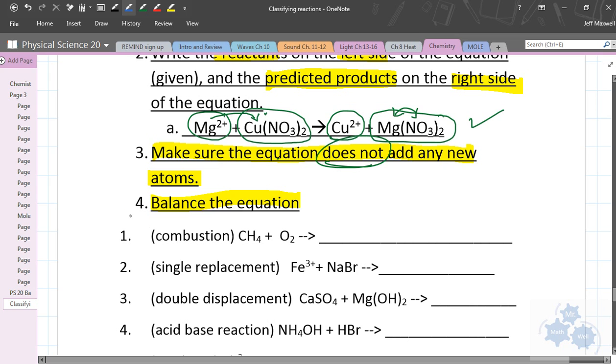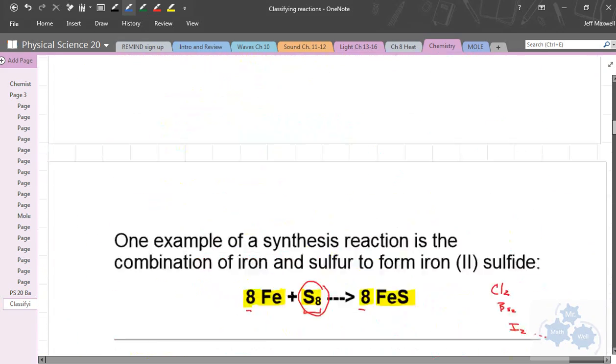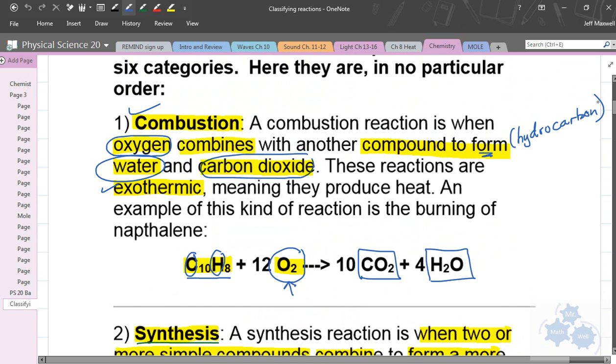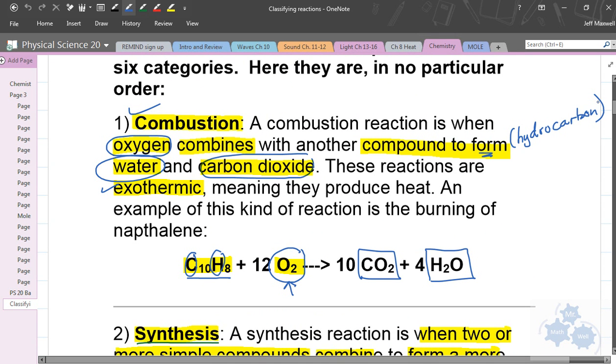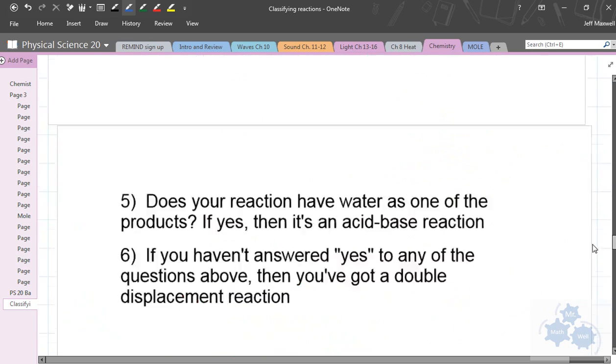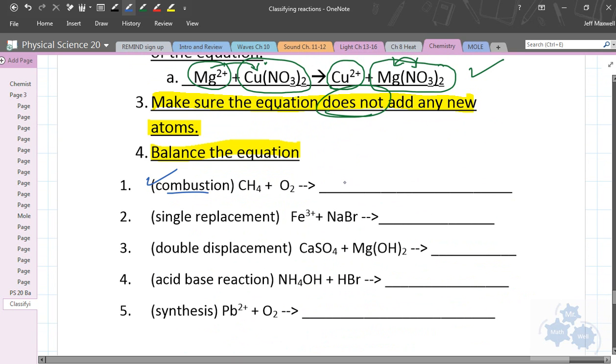So example number one, this is what you're given. You're given that it's a combustion reaction. Now, a combustion reaction, go back to your types of reactions here. You should probably have this memorized by now. If you don't, you should go back and memorize what these mean. But combustion is a compound with oxygen. And usually it's a hydrocarbon plus oxygen. And it always produces carbon dioxide and water. So that's an easy one to predict those products. Super easy. You don't even have to really think. So the products are carbon dioxide plus water. I haven't added any new atoms.